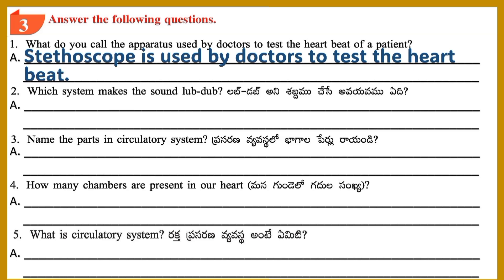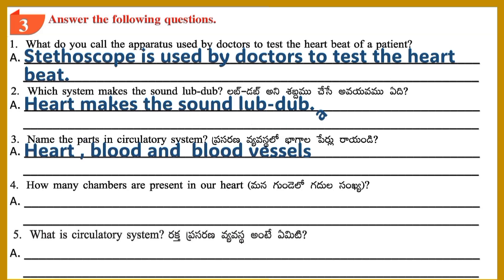Question 2: Which system makes the sound 'Lub Dub'? Answer: The heart makes the sound Lub Dub. Question 3: Name the parts of the circulatory system. Answer: Heart, blood and blood vessels are the parts of the circulatory system.